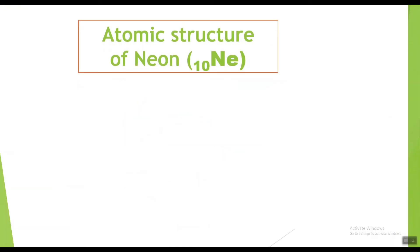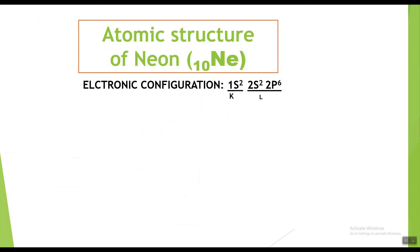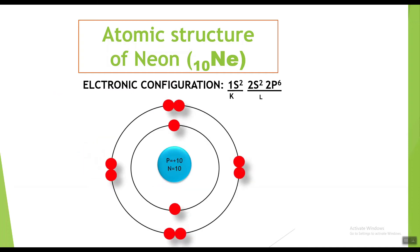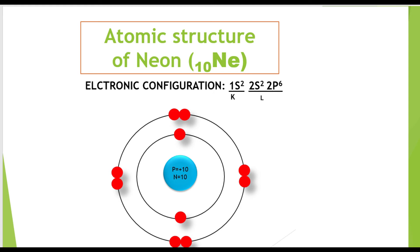Now neon. The symbol for neon is Ne with atomic number 10, showing it has ten electrons. The electronic configuration of neon is 1s2 2s2 2p6, showing two electrons in the K shell and eight electrons in the L shell. The atomic structure of neon shows ten protons and ten neutrons in the nucleus, with ten electrons around the nucleus: two in the K shell and eight in the L shell.